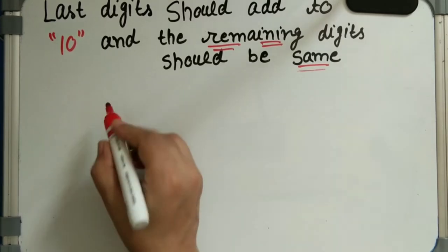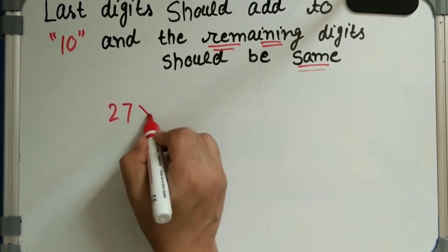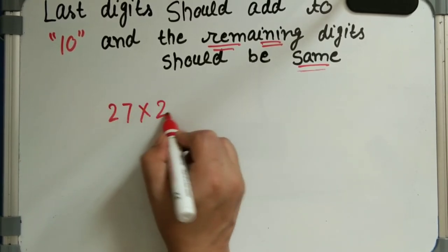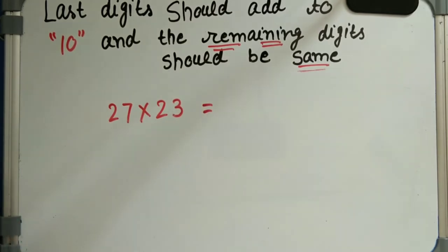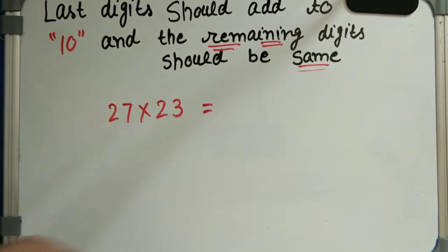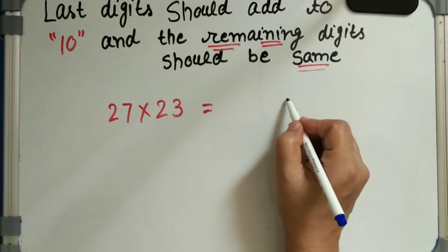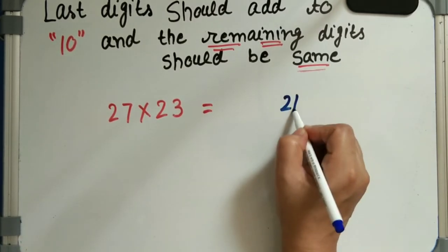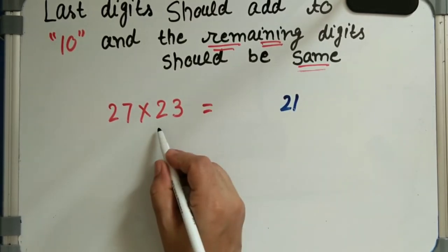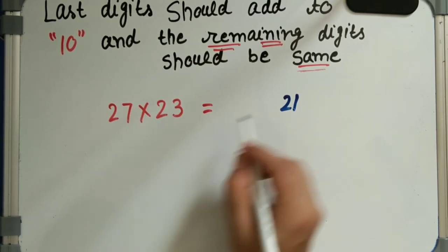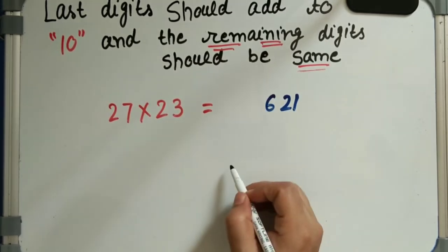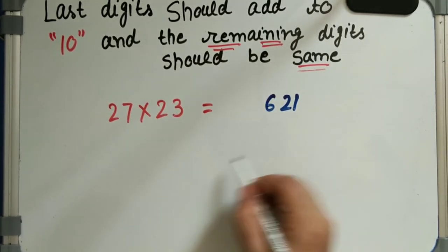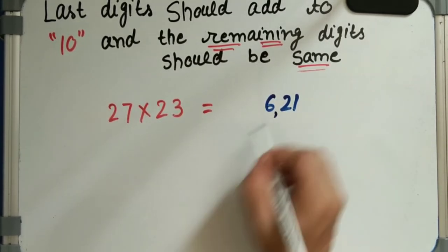Next question: 27 into 23. Here, 7 threes are 21. We add 1 to the remaining digit 2 to get 3. Then 3 into 2 equals 6. So the answer is 621.